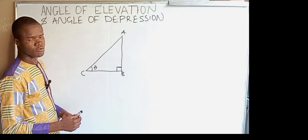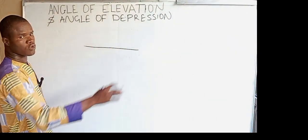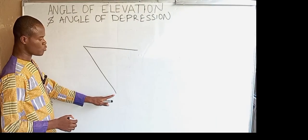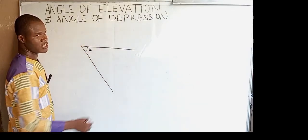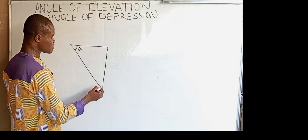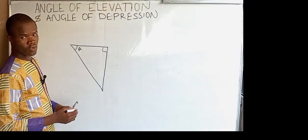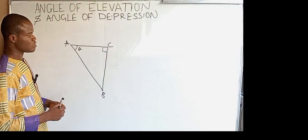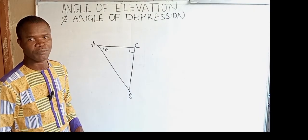Now let's look at angle of depression. To determine the angle of depression, first of all we consider our normal — remember, your forward-looking horizontal line is your normal. Now if you decide to look downward at an object, the angle your downward sight makes with the normal is what we refer to as angle of depression. Connecting the normal with your downward side forms a right angle triangle, so let's call here A, here B, and here C.